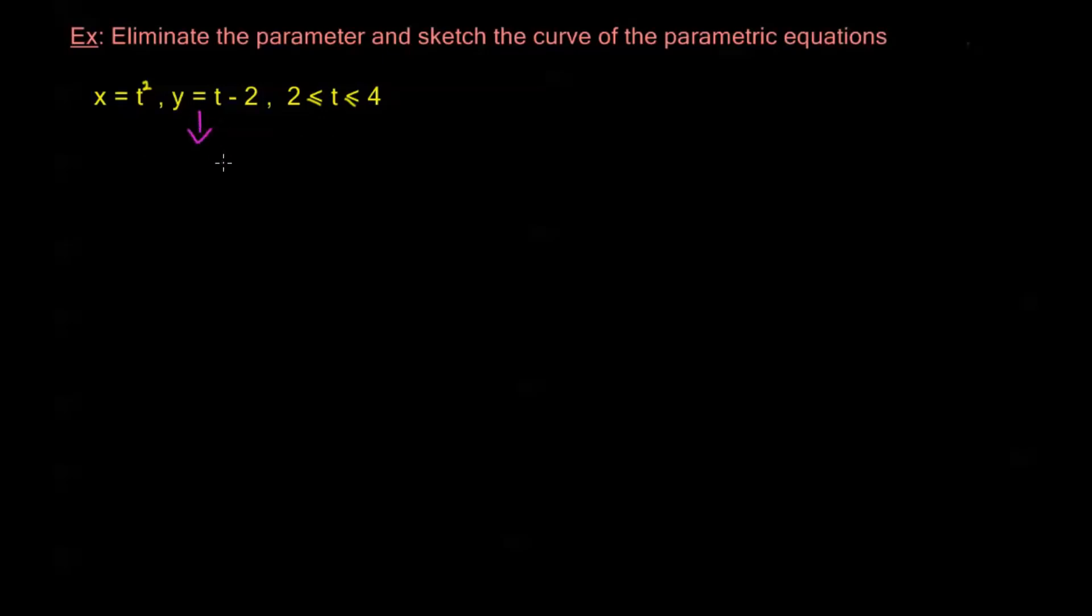Now first I notice that this equation here is a bit easier to solve for t, isn't it? Right away I add 2 to both sides and I get t is equal to y plus 2. Now I can take this result and plug it in to my other parametric equation. And I get x is equal to t squared, but plugging in I get y plus 2 squared.